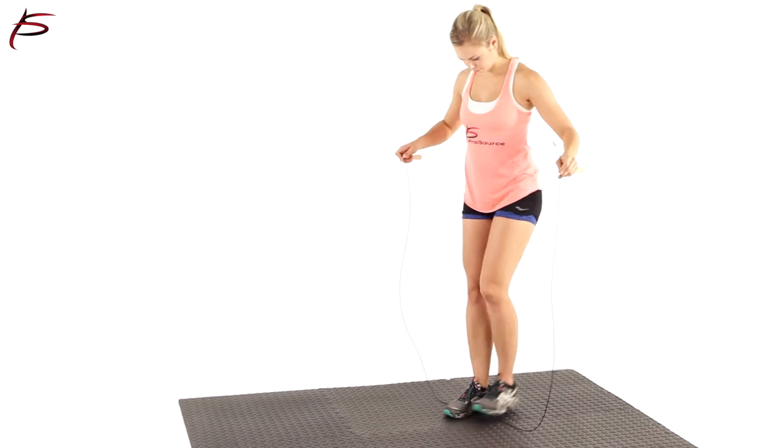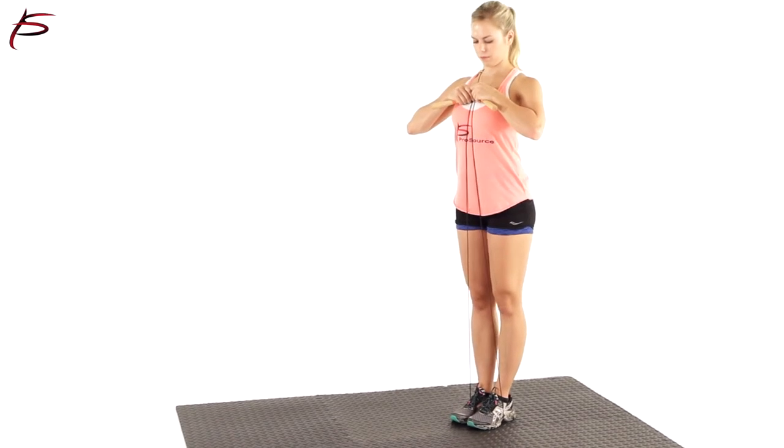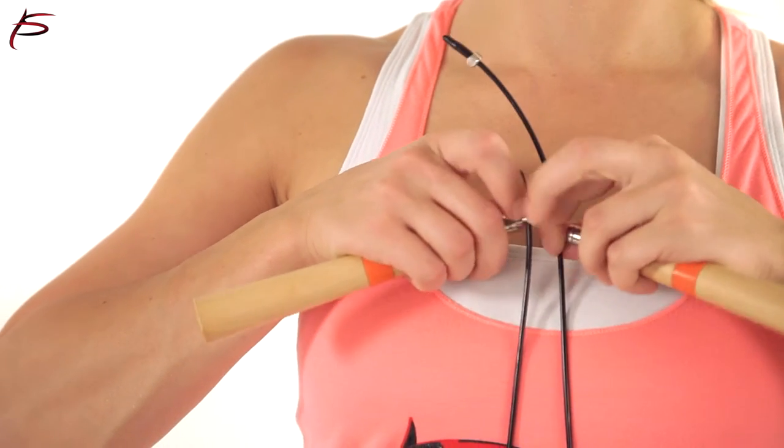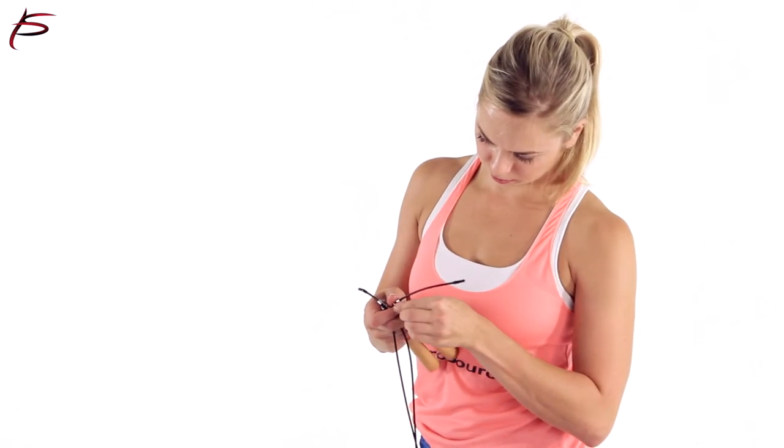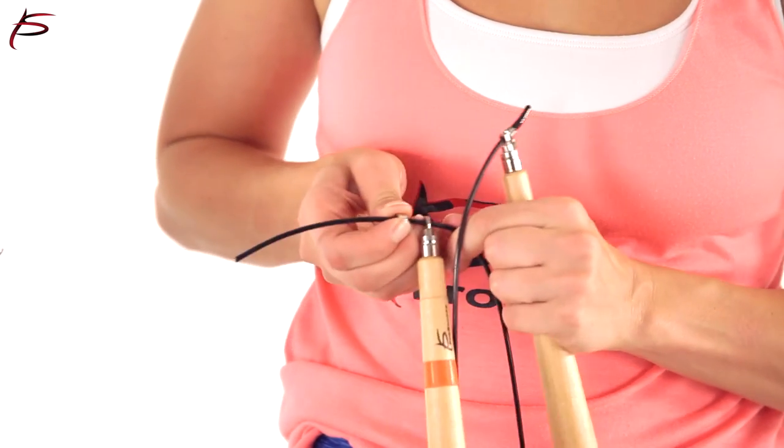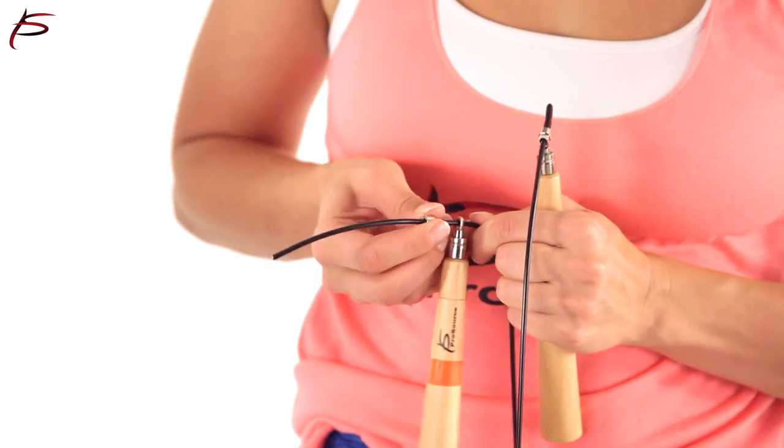It is one-size-fits-all. To customize the size of the rope, simply measure the rope by standing on the middle of the cord so that the end of the handles comes up to the space between the sternum and the clavicle. Simply adjust the length with an easy screw and lock. Make sure it is clamped tight before jumping.